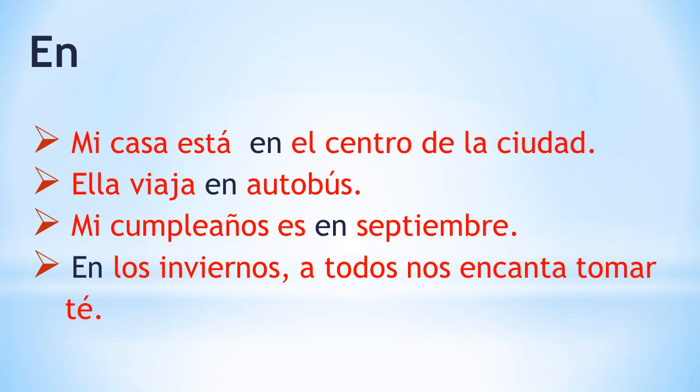EN. En is used with locations, medium of transport, and when you talk about seasons, years and months. Por ejemplo, mi casa está en el centro de la ciudad. My house is in the center of the city. Ella viaja en autobús. She travels by bus. Mi cumpleaños is en septiembre. My birthday is in September.